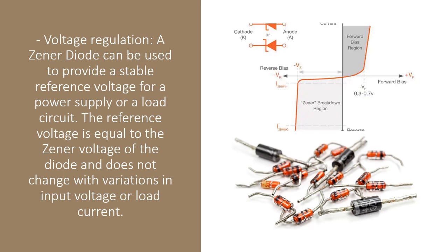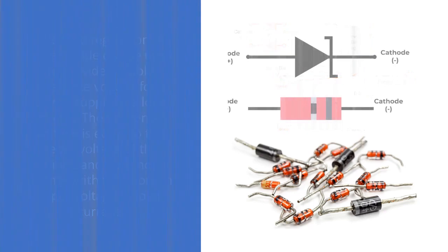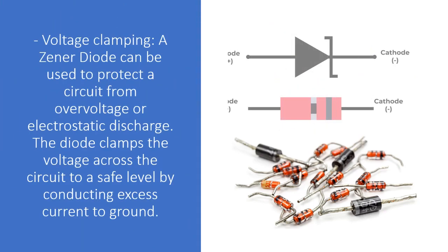Voltage clamping: A Zener diode can be used to protect a circuit from overvoltage or electrostatic discharge. The diode clamps the voltage across the circuit to a safe level by conducting excess current to ground.